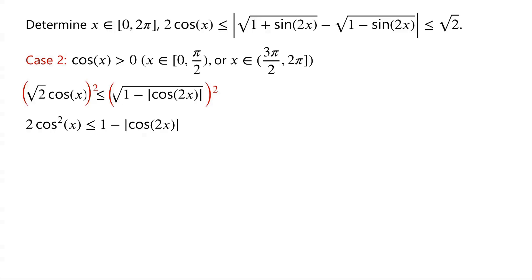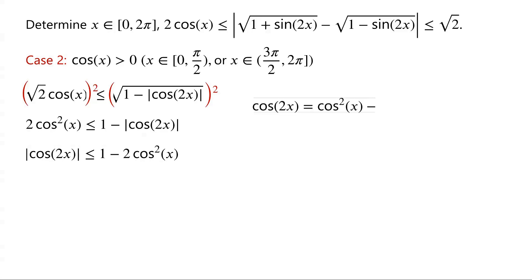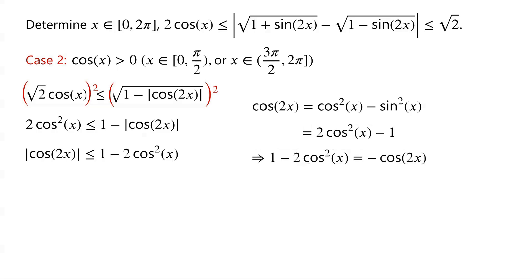Rearranging the inequality, we have |cos(2x)| ≤ 1 - 2cos²(x). We know that cos(2x) = cos²(x) - sin²(x). Since sin²(x) = 1 - cos²(x), this can be written as 2cos²(x) - 1. Rearranging: 1 - 2cos²(x) = -cos(2x).